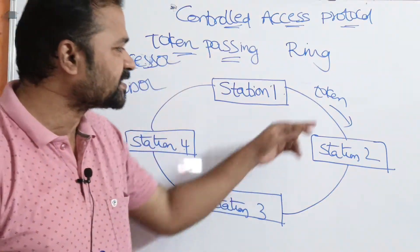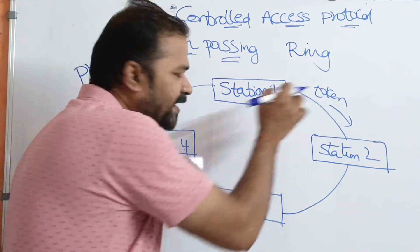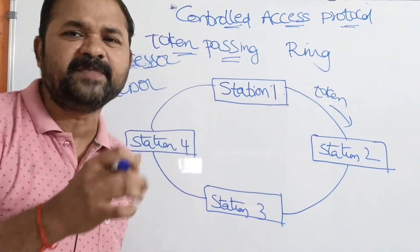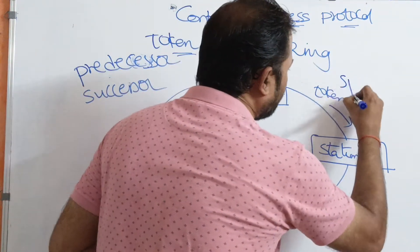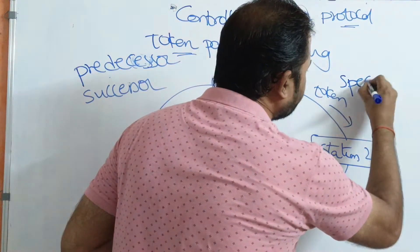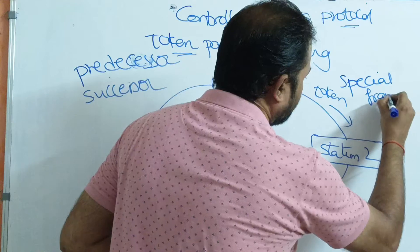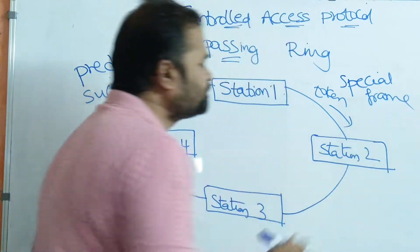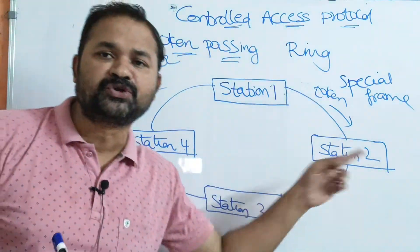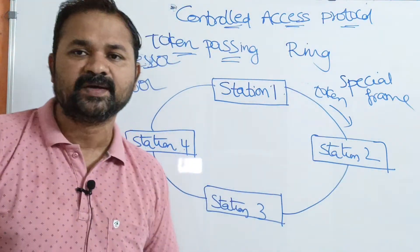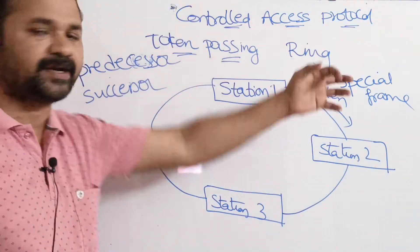The next point is the token. Token means a special frame. A special frame called token will be circulated around the ring.